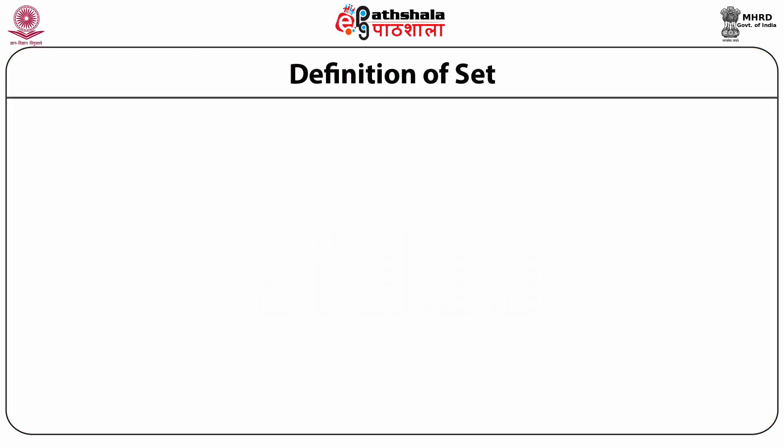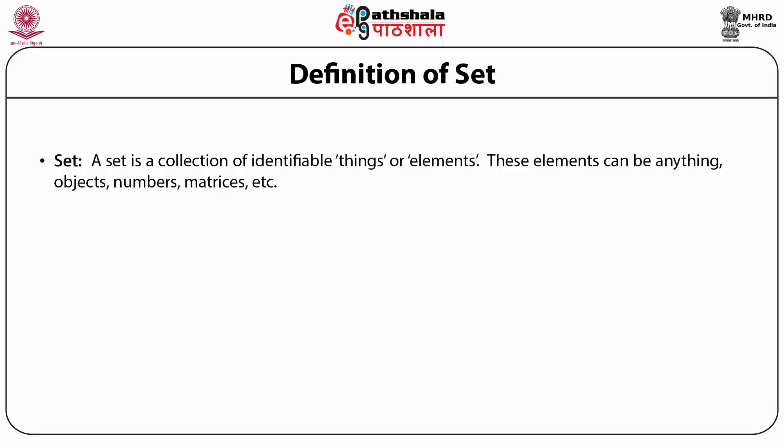Before we start with the study of groups, I want to start with defining a set. A set is a collection of identifiable things or elements. These elements can be anything — objects, numbers, matrices, etc. From the definition of a set, it should be clear whether the given thing belongs to the set or not.